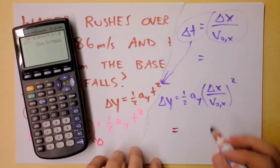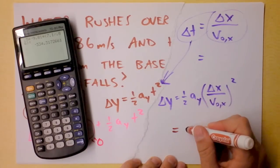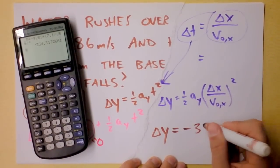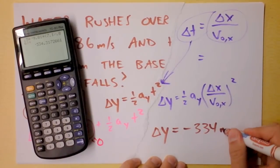You ready? Delta y, that's how high the cliff is. Dang! That is a high waterfall. Probably not realistic. Sorry, I screwed up this one here. This is negative 334 meters.